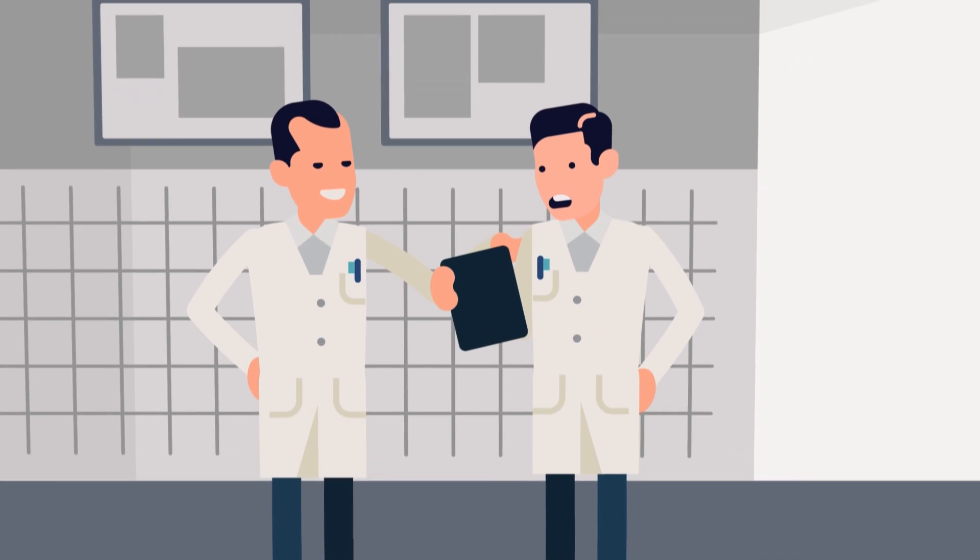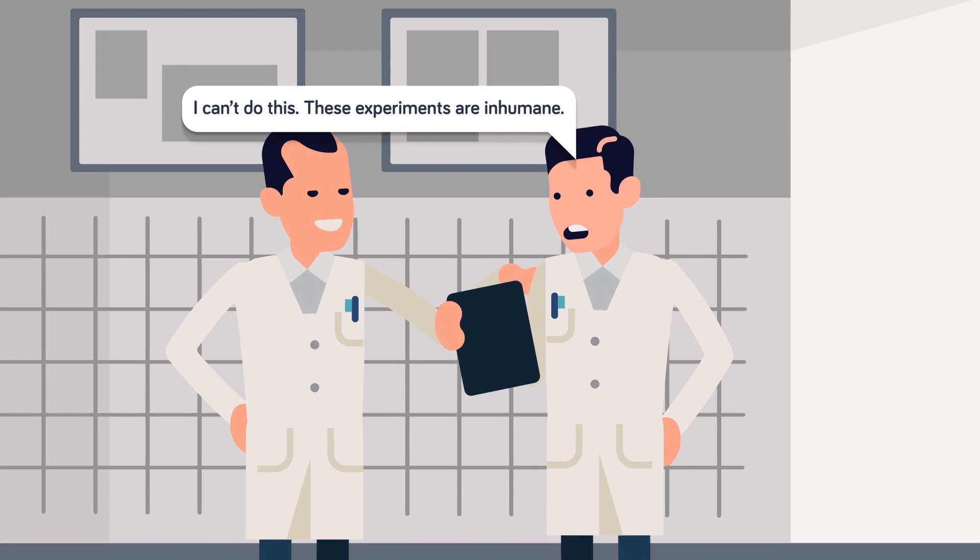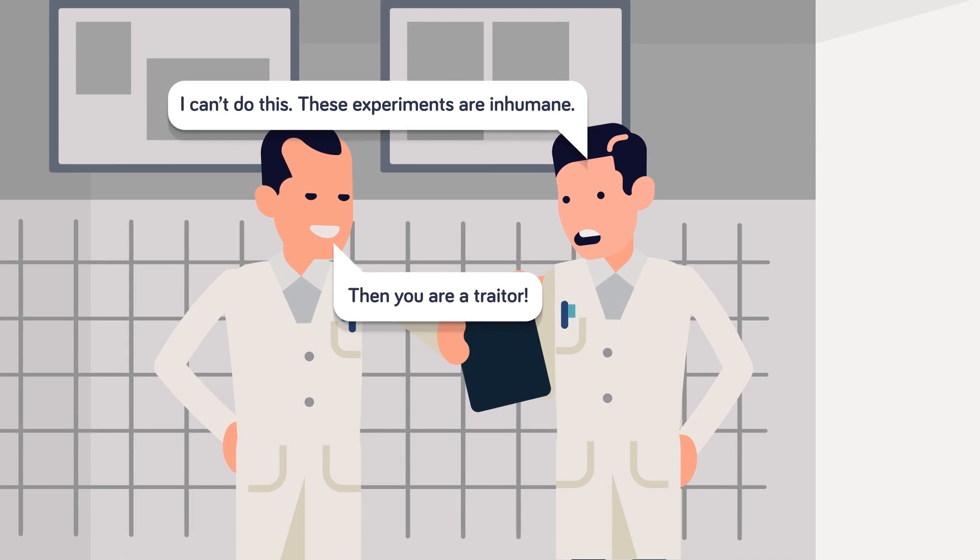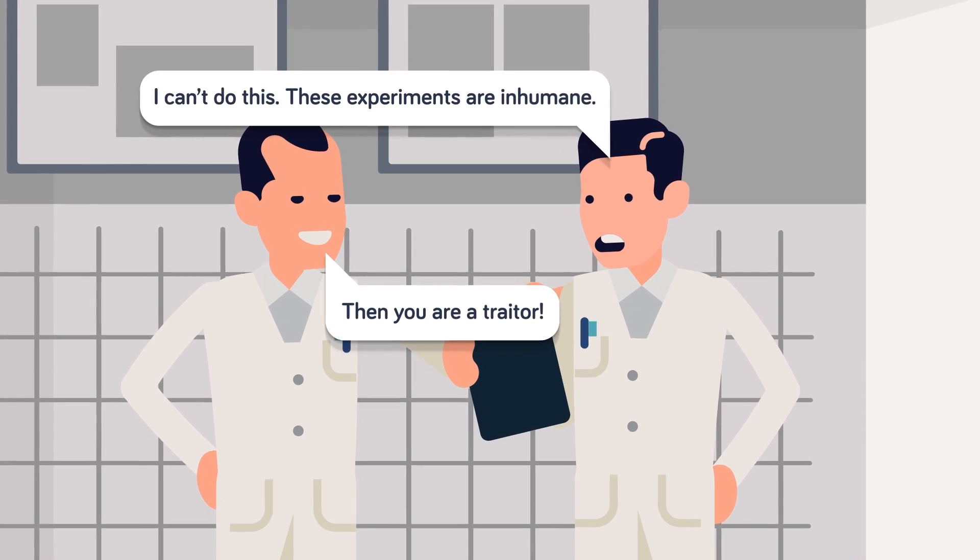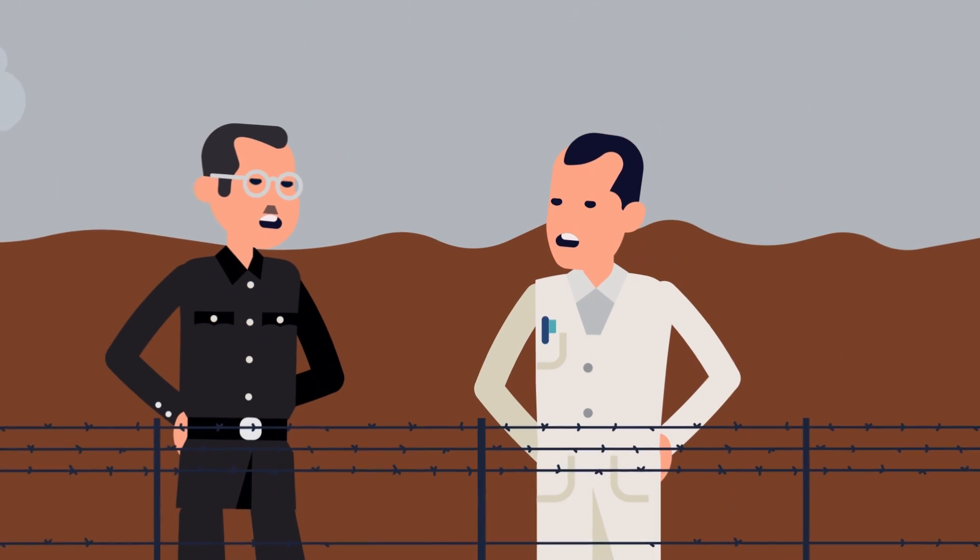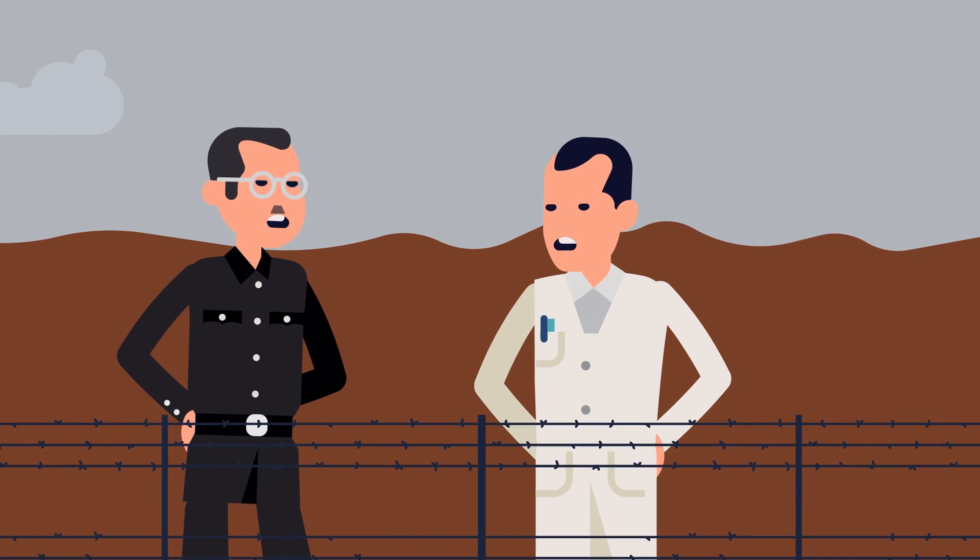Interestingly, lower down he also wrote that Professor Holtz-Lunner declined to perform the freezing experiments on humans out of shame. Rascher then added, I shall take over the exploitation of them, meaning the humans.